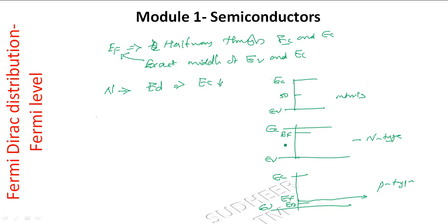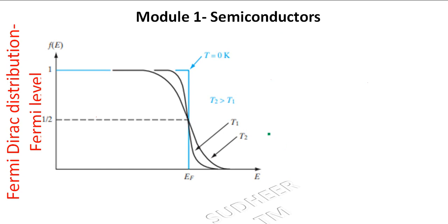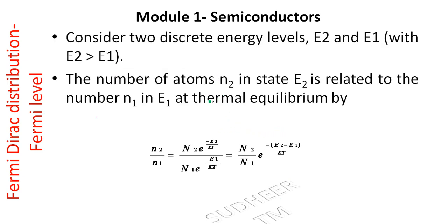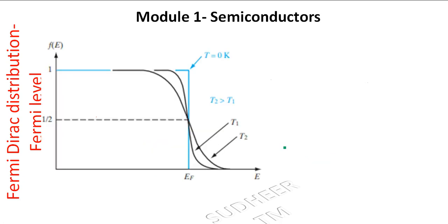In P-type material, the Fermi level moves toward the valence band, and in N-type material, the Fermi level moves toward the conduction band. Plotting the Fermi distributions at different temperatures: at T = 0, we get an exact square step function.